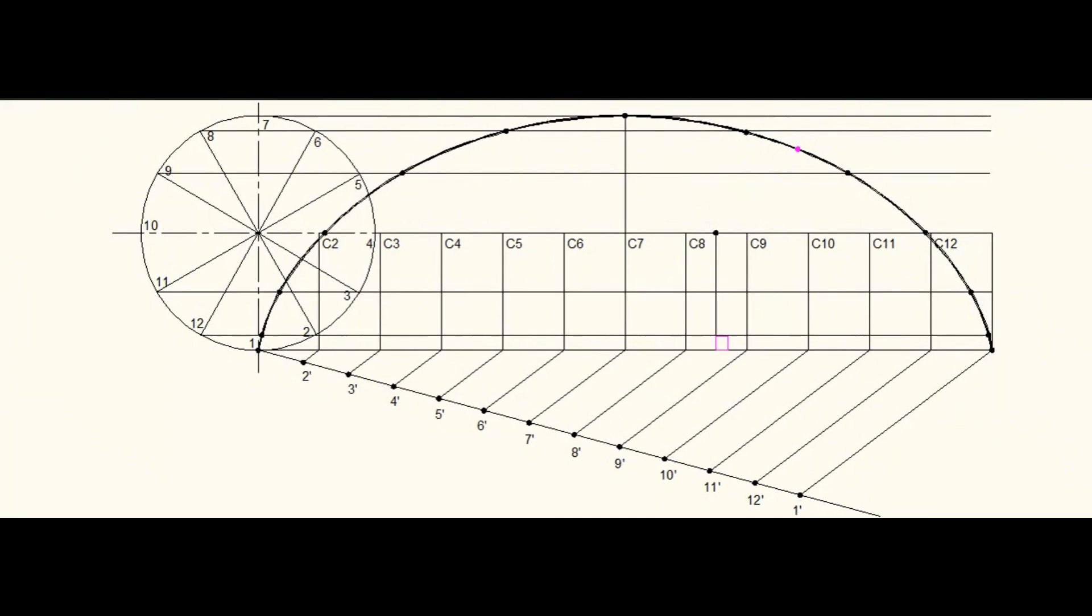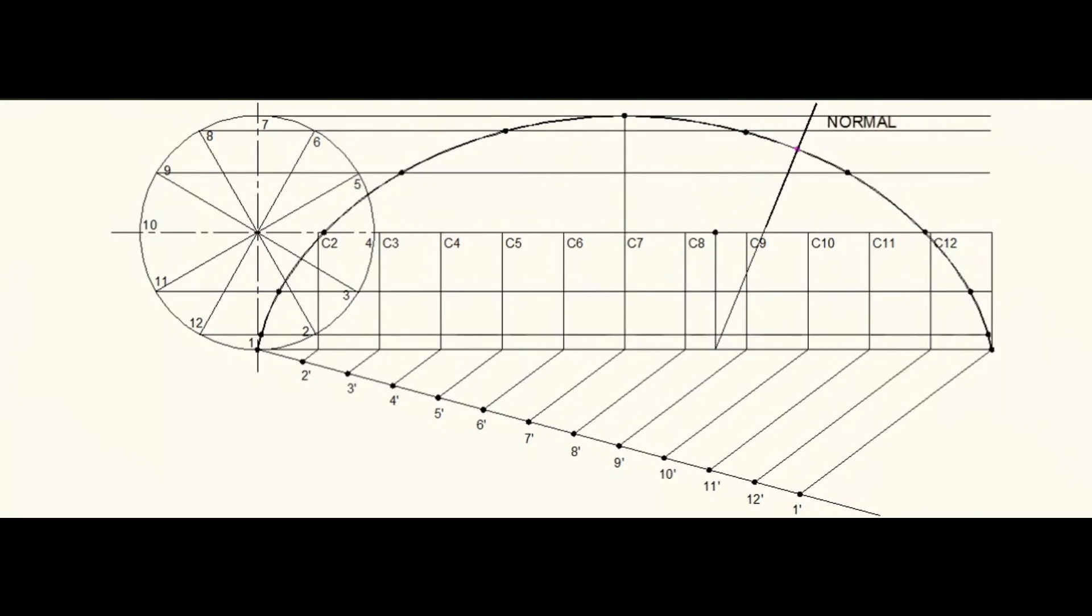Project it till the base. Join the point on the base line and point on the cycloid. Extend that line away from the cycloid. This is called normal.